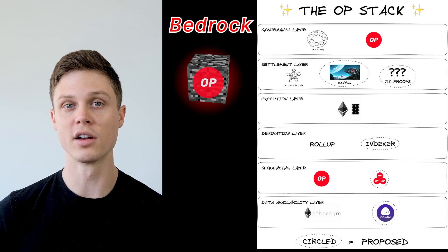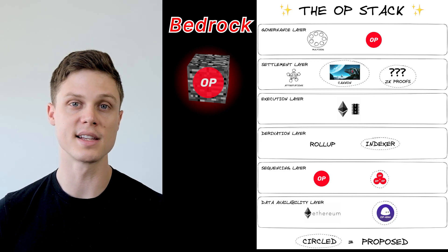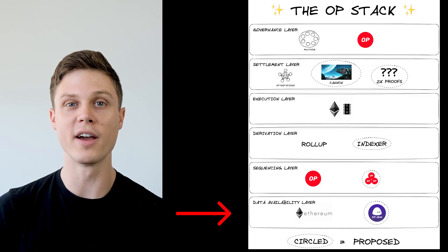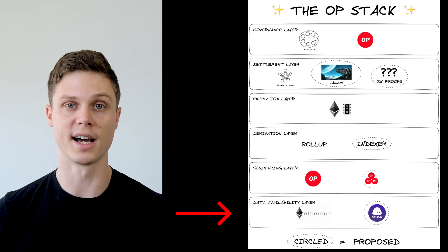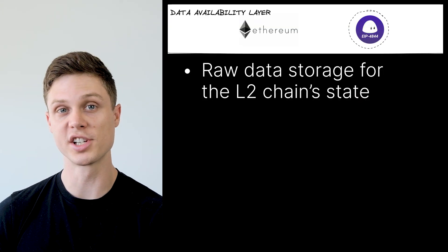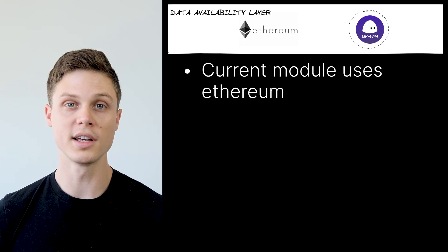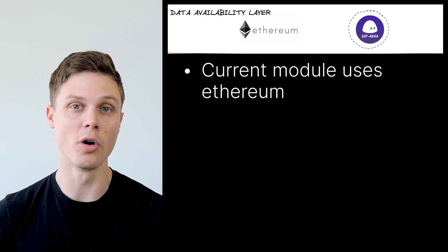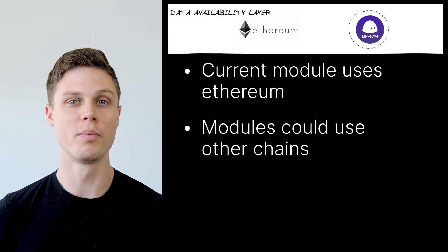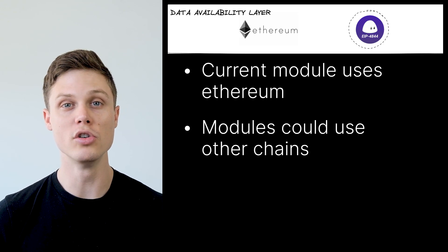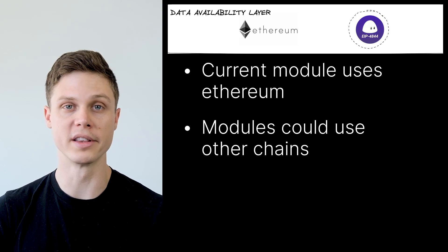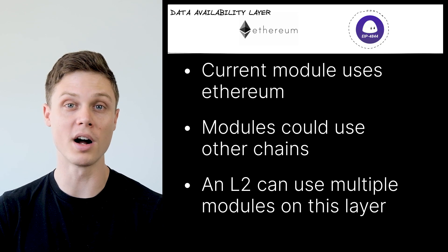In its current form, the modules for each of these layers in the OP stack are the modules that exist as part of Bedrock, which is Optimism's most recent major upgrade. However, each layer has a handful of potential modules that are either active works in progress or generally accepted as a potential upgrade in the future. The data availability layer is at the bottom of the stack — this is where the raw input data to the OP stack chain is stored, and the cost of this data storage is actually the biggest contributor to fees on L2 right now. Currently, the data is stored on Ethereum mainnet, and the module available to the OP stack is the Ethereum data availability module. With the OP stack, it's possible that somebody could create a new module that uses a different chain to store this raw input data, and OP stack chains are also able to use multiple data availability modules if they'd like.